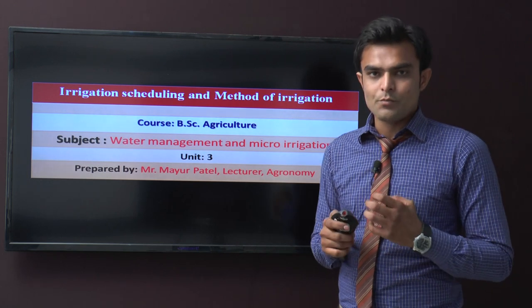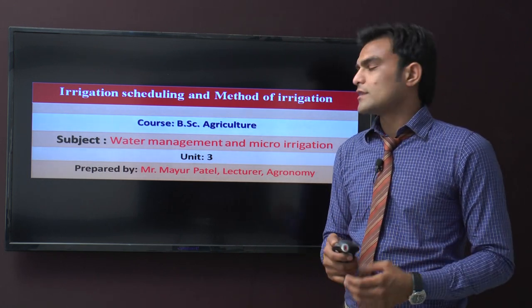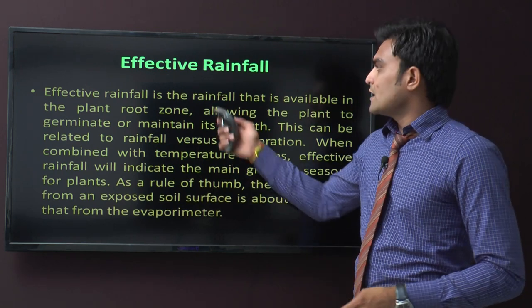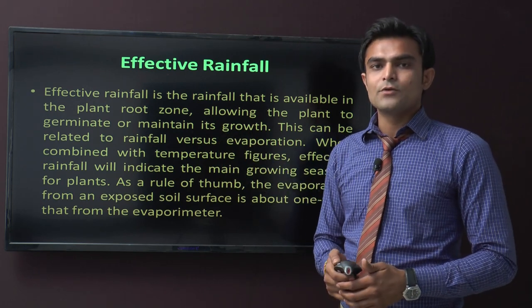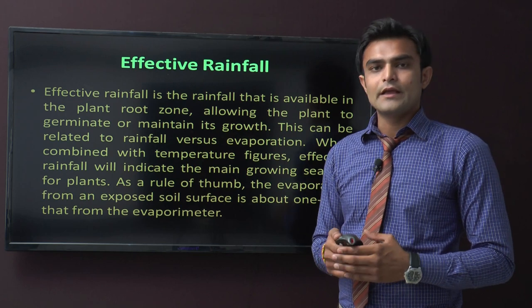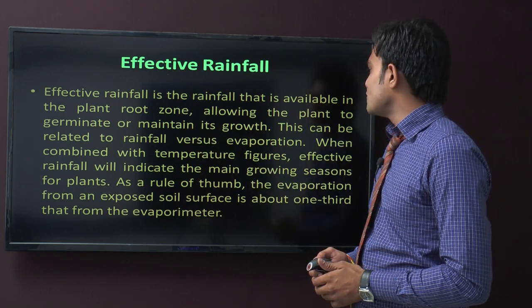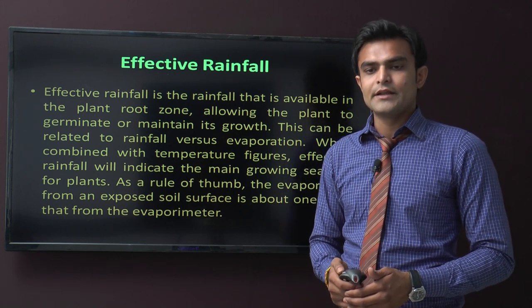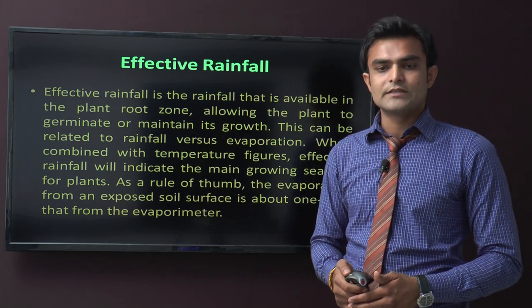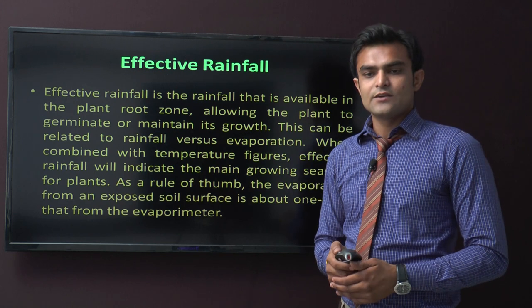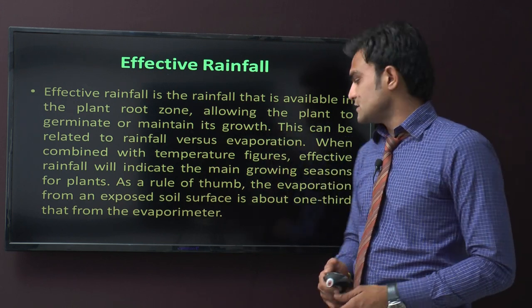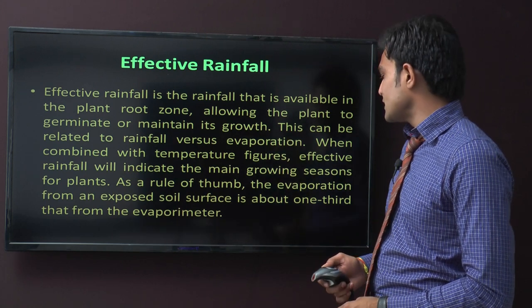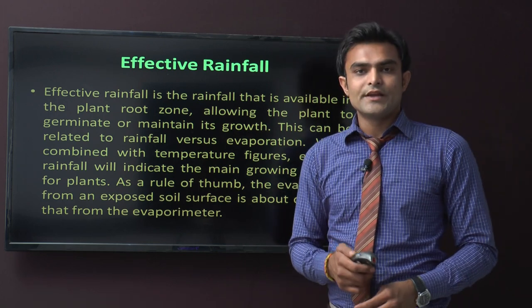First, we need scheduling of irrigation before the selection of different methods. Effective rainfall is the most important thing in irrigation. Effective rainfall is the rainfall that is available at the plant root, allowing the plant to germinate or maintain its growth. This can be related to rainfall and various evaporation. When combined with temperature figures, effective rainfall will indicate the main growing seasons for plants. As a rule of thumb, the evaporation from the exposed soil surface is about one-third that from the evaporation meter.